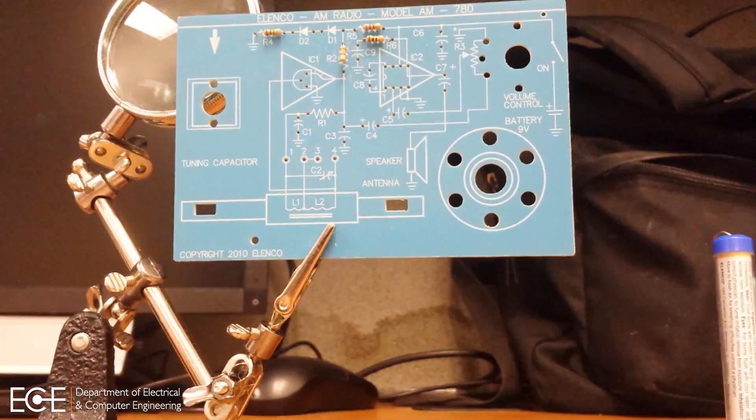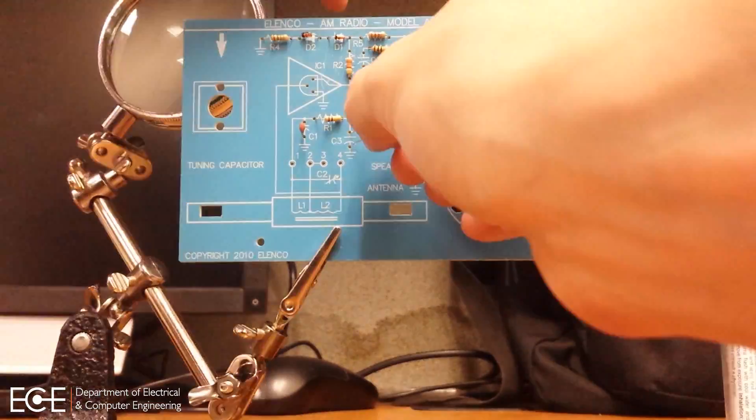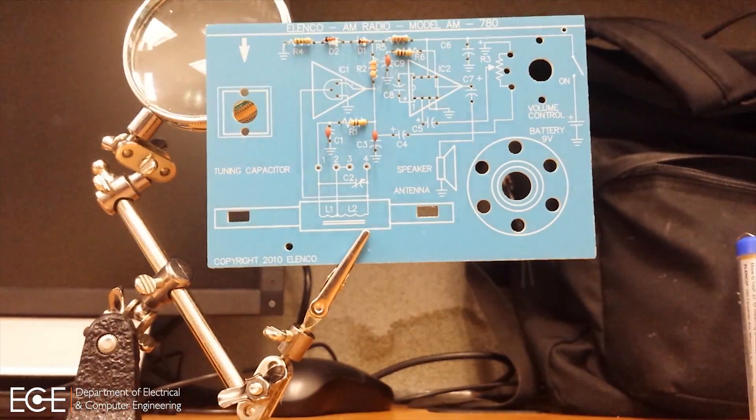First, we'll go ahead and put in all the resistors and diodes. Remember that the black notch on the diode is the line on the circuit schematic.